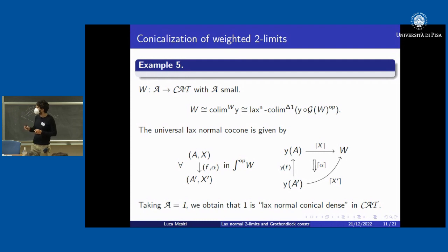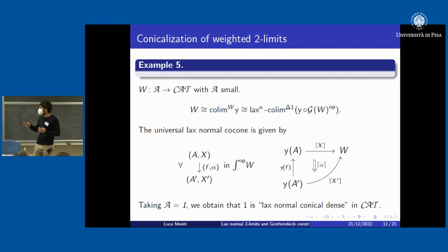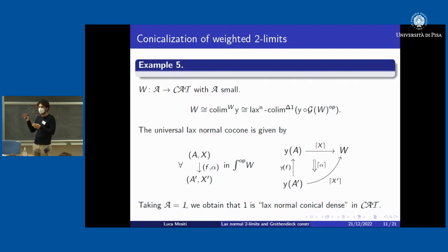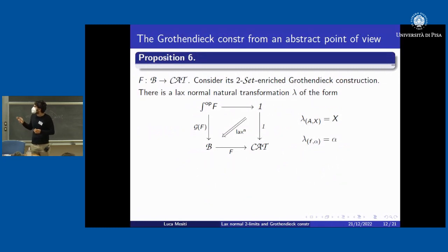Consider the example of colimits of representables that build every copresheaf. The lax normal cocone we obtain shows that the Grothendieck construction is really born to make this work. In particular, taking A equal to one, we obtain that one is lax normal conically dense in Cat: every category can be built as a lax normal conical colimit of one. The lax normal cocone is given on components by taking the objects of that category, providing another way to capture a category beyond functors from two.